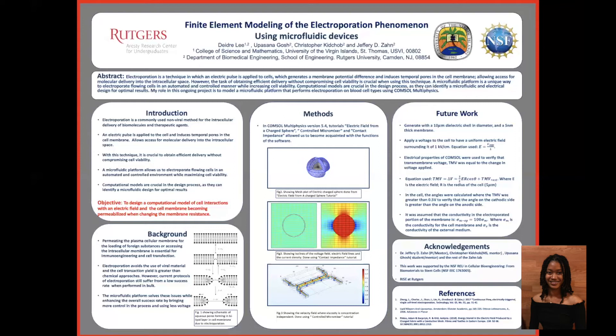Finally, the controlled micromixer tutorial shows us how to apply a stream that is in contact with the cell for a controlled period of time. It controls the flow rate, which means we can control the amount of biomolecules we can introduce into the cell by diffusion. Figure three also shows the velocity field where viscosity is concentration dependent.